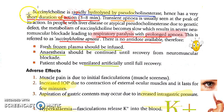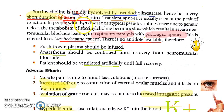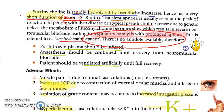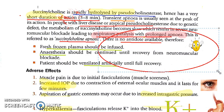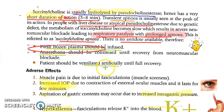Regarding adverse effects: succinylcholine has a short duration of action of 3 to 8 minutes and is hydrolyzed by pseudocholinesterases. During skeletal muscle relaxation, transient apnea can occur. However, if the person has liver disease or atypical pseudocholinesterase, succinylcholine cannot be degraded, causing respiratory paralysis and prolonged apnea — called succinylcholine apnea. There is no antidote available; treat with fresh frozen plasma.